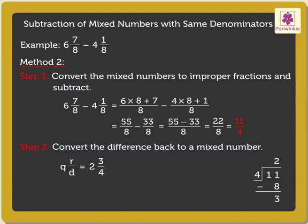Thus, the resulting mixed number is 2 and 3 upon 4.